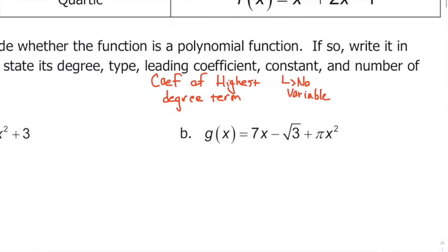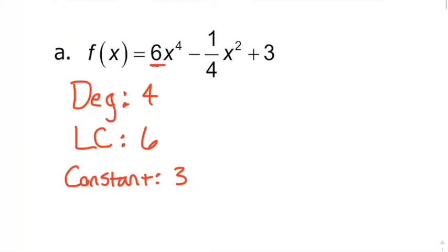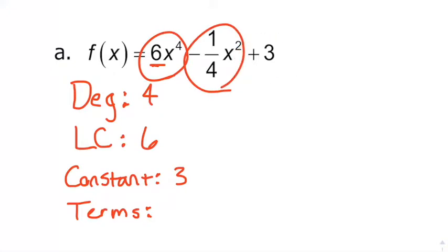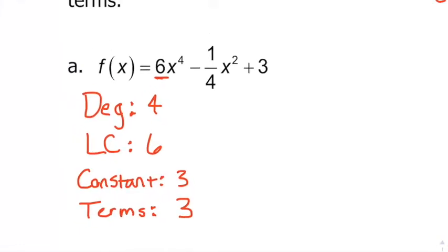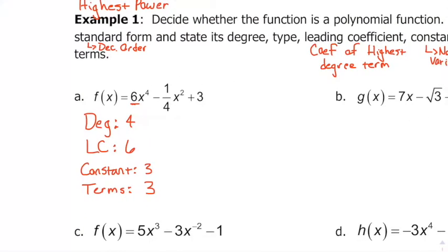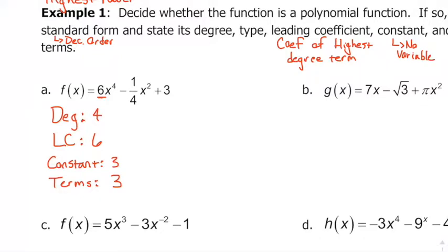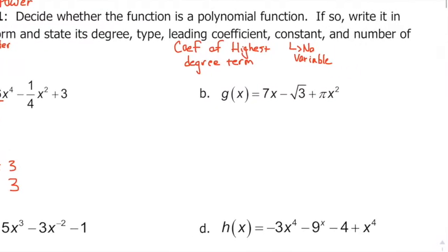The number of terms is just how many individual pieces you have — one, two, three. Terms are usually separated by an addition sign or a subtraction sign. So you're just recognizing the different parts.